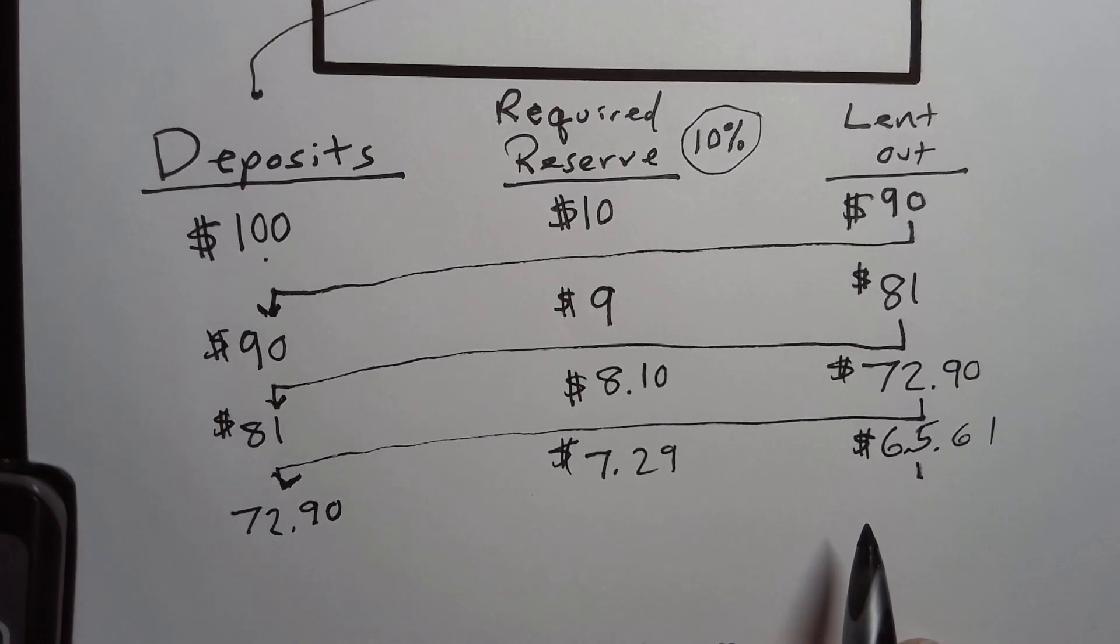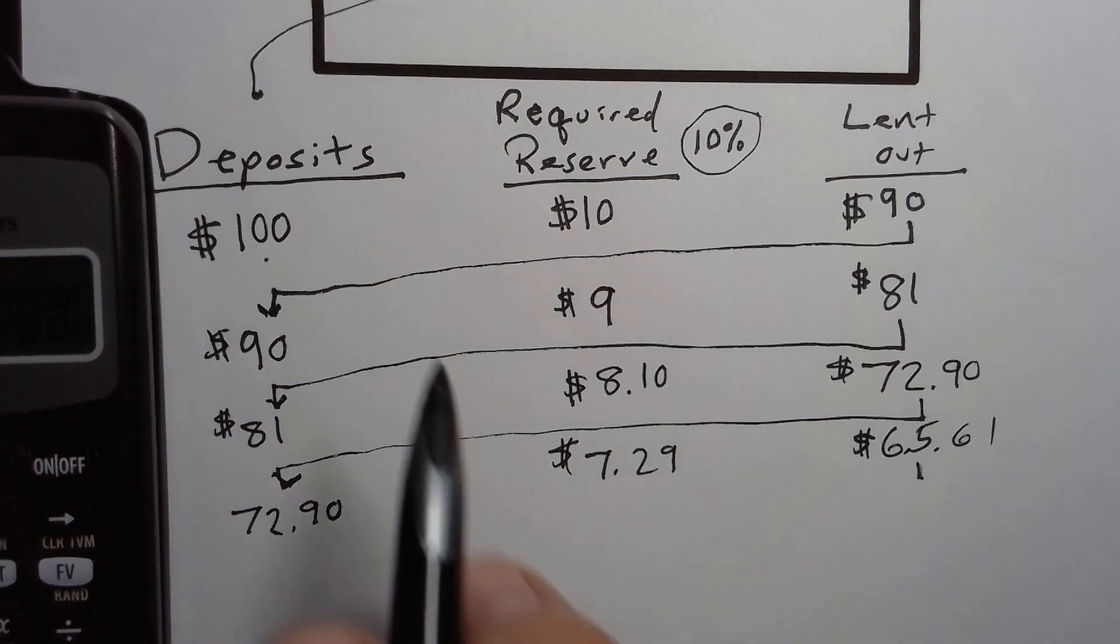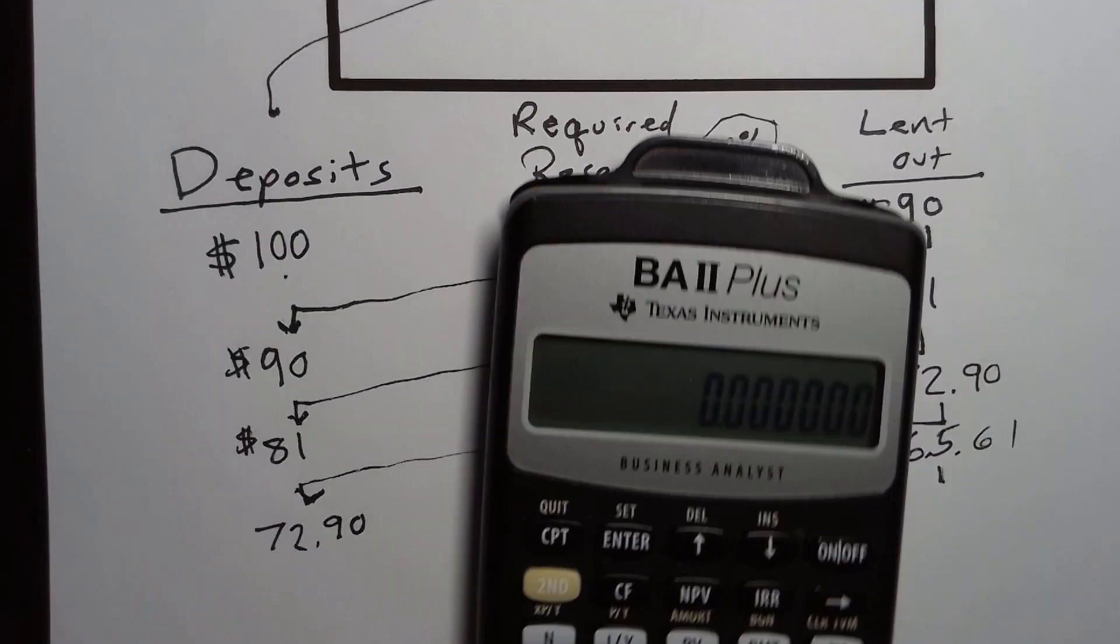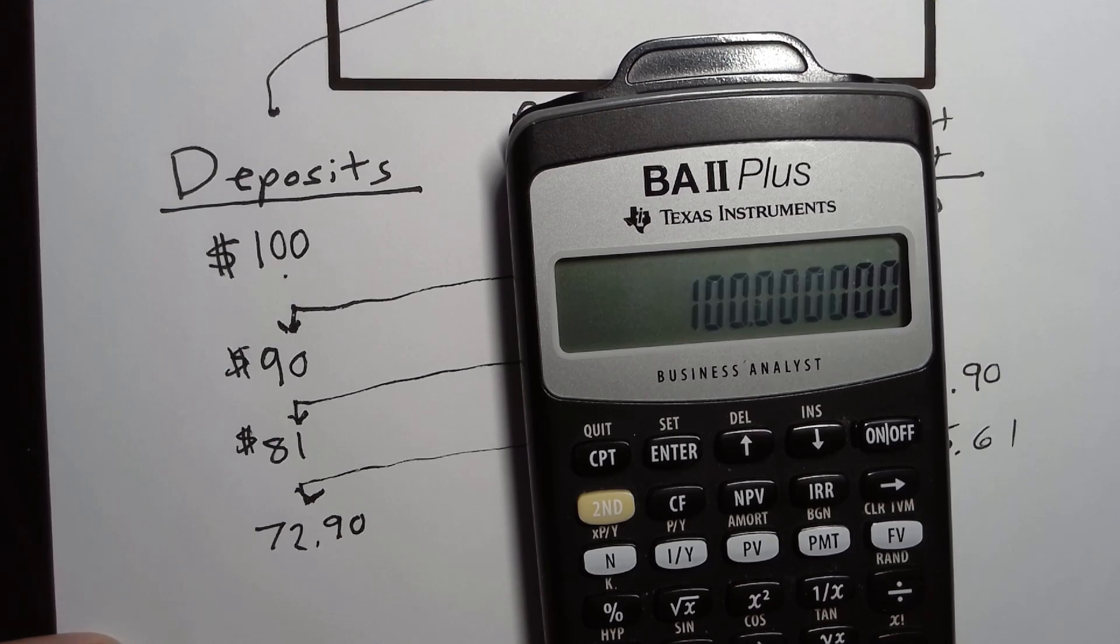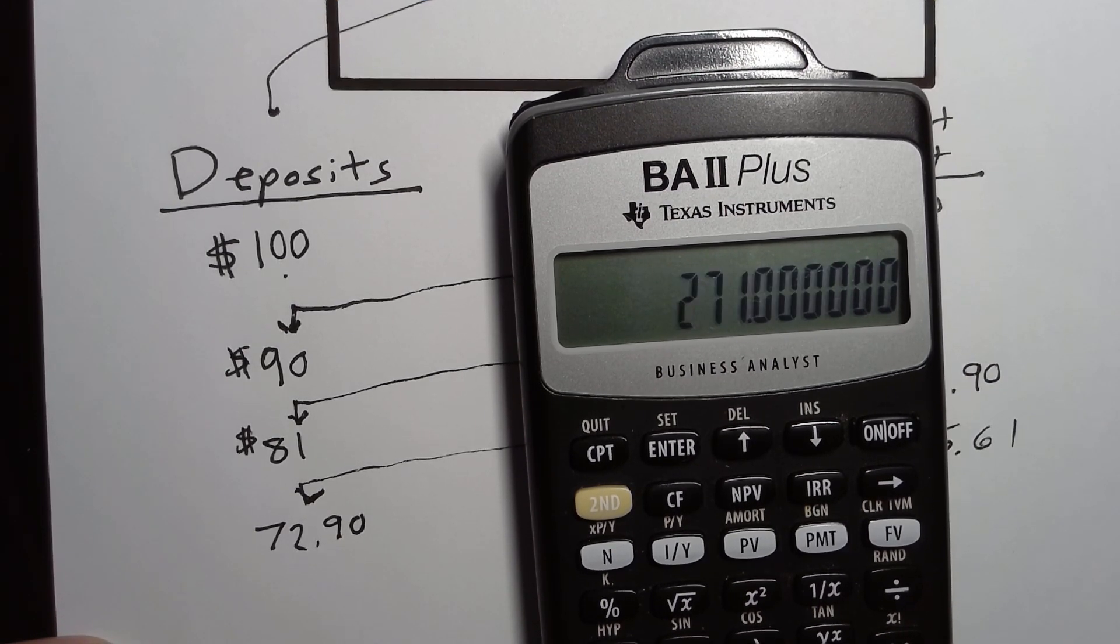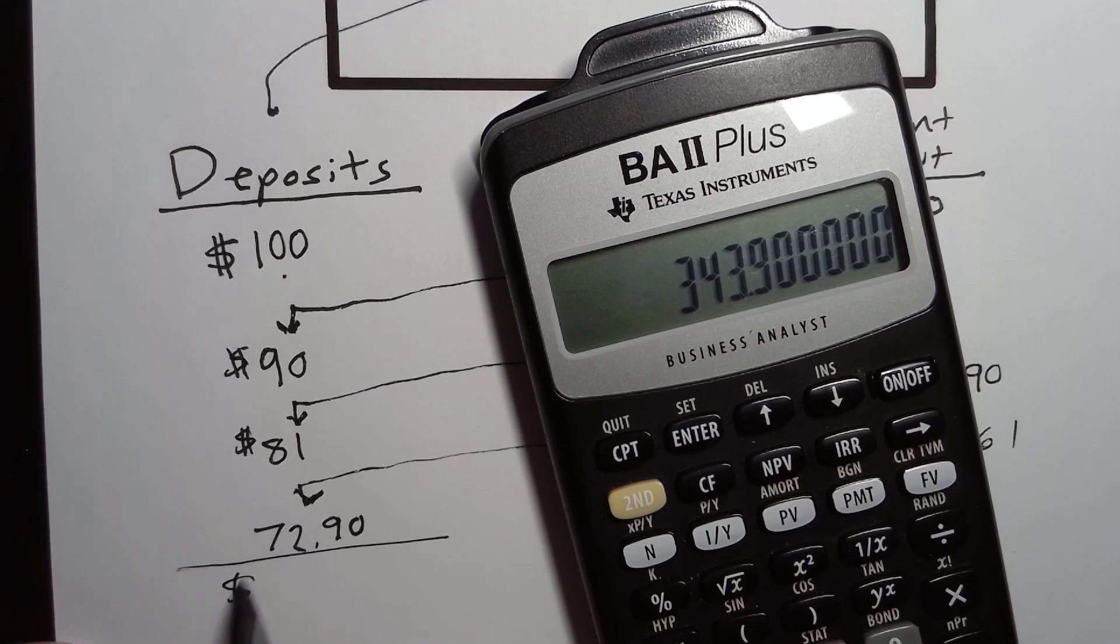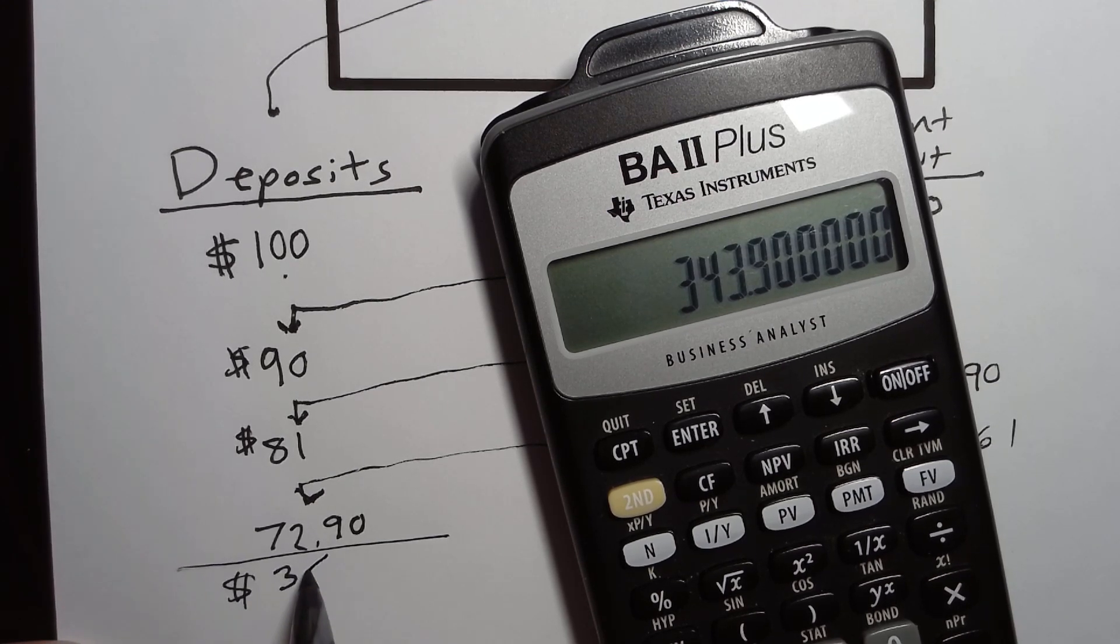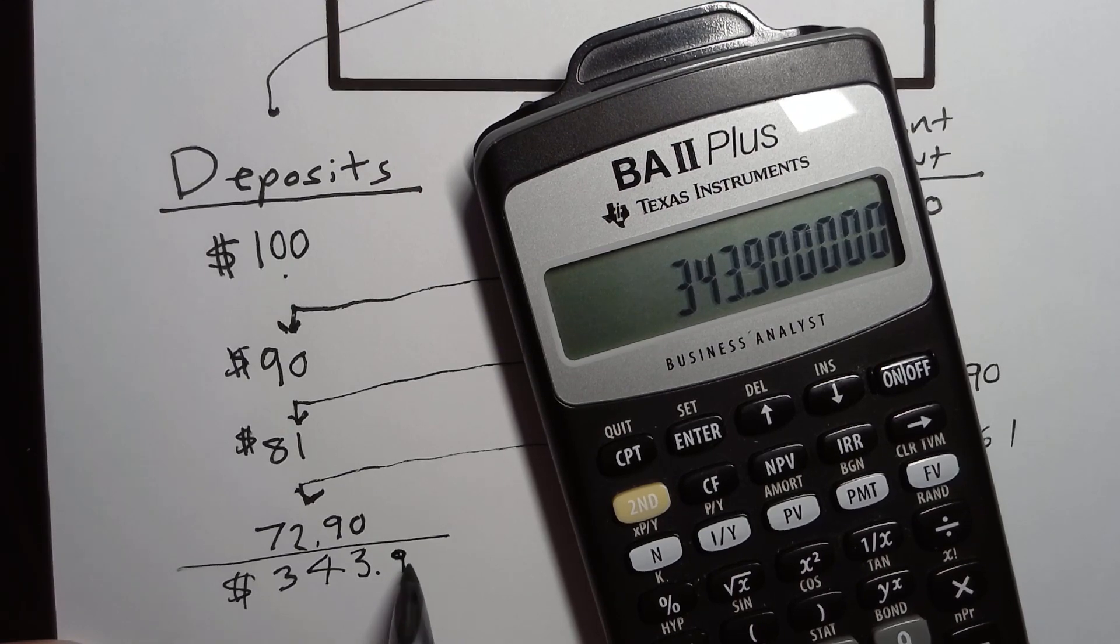So let's look at how much the bank has on deposit. So if we're going to add these up, we have customers that have deposited $100 plus $90 plus $81 plus $72.90. So that means that customers have deposited $343.90 into this bank.